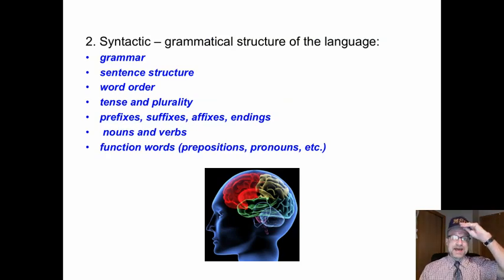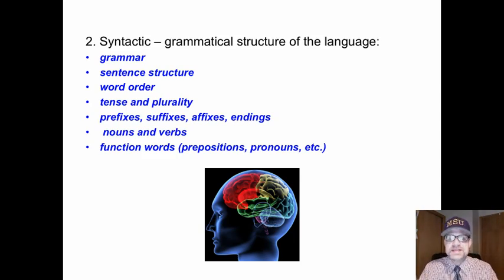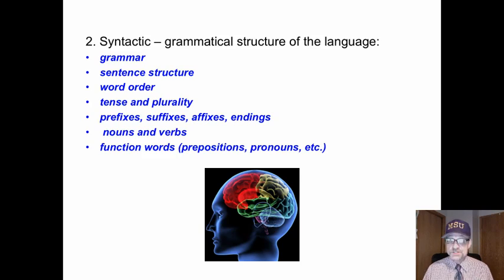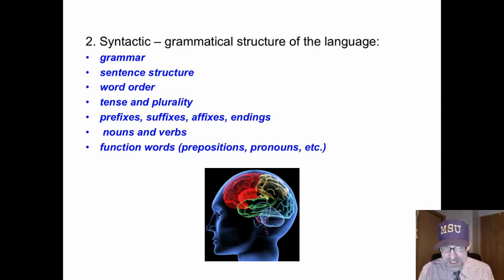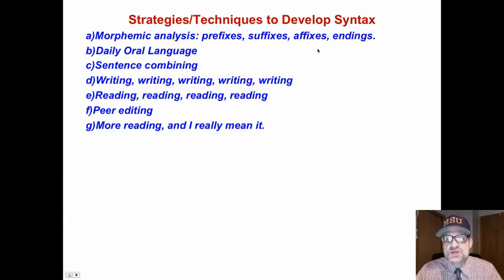Syntactics is the grammatical structure of the language. We use grammar, word order, sentence structure, tense and plurality — all those things — to cue our brain as to what the next word might be. The brain does not make sense of the world in terms of letters, but instead looks at ideas and uses minimal letter cues. Eye movement research shows it's not possible to read letter by letter and create meaning with text.